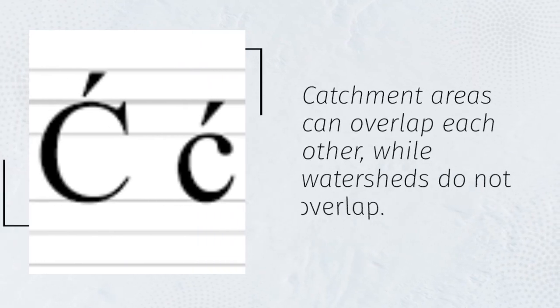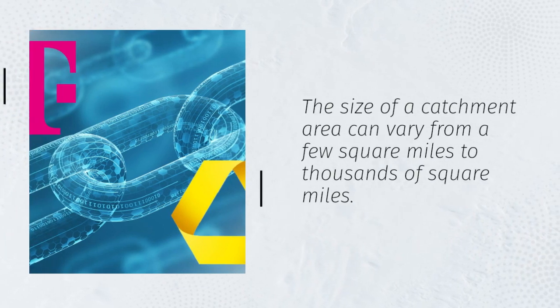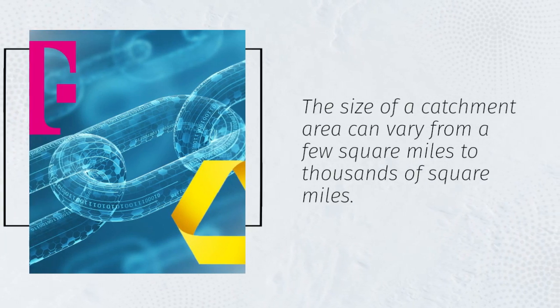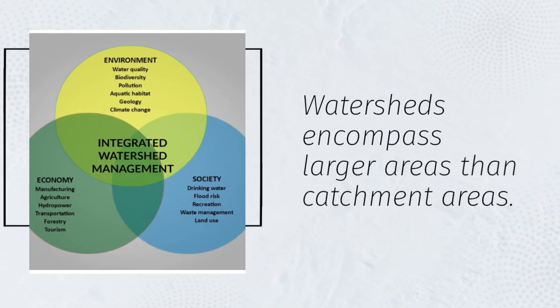Catchment areas can overlap each other, while watersheds do not overlap. The size of a catchment area can vary from a few square miles to thousands of square miles. Watersheds encompass larger areas than catchment areas.